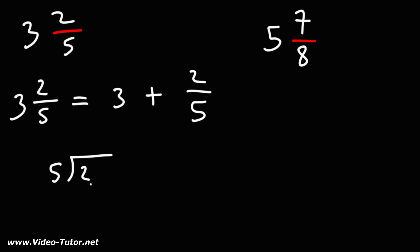So we want to divide 2 by 5. The 5 is going to be on the outside. 5 doesn't go into 2, so we're going to put a decimal point and a 0. 5 goes into 20 four times. So 5 goes into 2 point 4 times. 5 times 4 is 20. 20 minus 20 is 0.